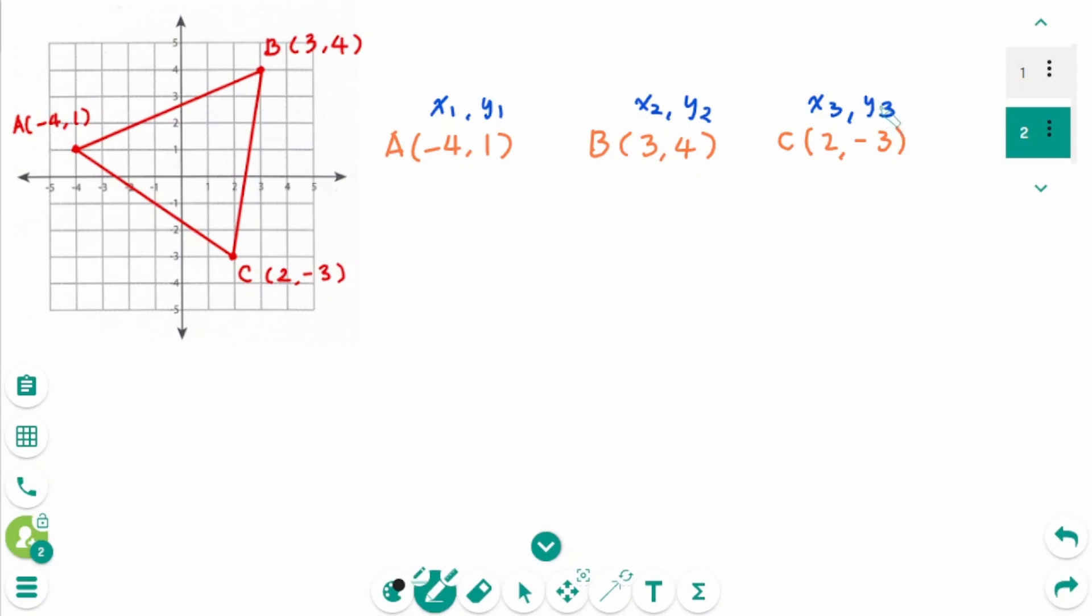The first thing to do is write the ordered pairs vertically. Then area equals one-half times the absolute value sign. Write x1, y1, x2, y2, x3, y3, then x1, y1 again.